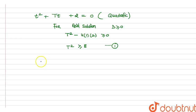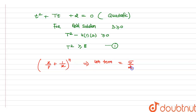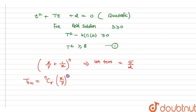Now for the binomial expansion (x/p + 1/x)^n, the fourth term is given as 5/2. Using the general term formula T_{r+1} = nCr · (x/p)^{n-r} · (1/x)^r, we set r = 3 for the fourth term. This gives: nC3 · (1/p)^{n-3} · x^{n-3} · x^{-3}.